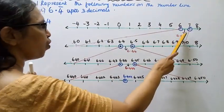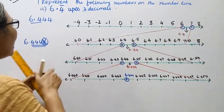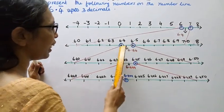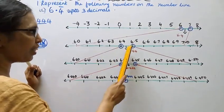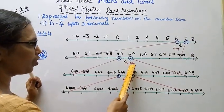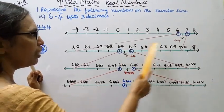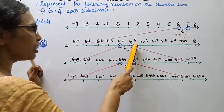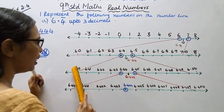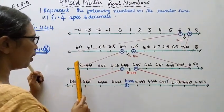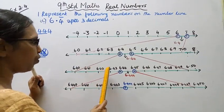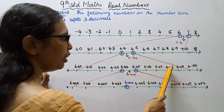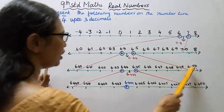Now, 6.444 lies between 6.4 and 6.5. We further divide the segment between 6.4 and 6.5 into 10 equal parts on the number line: 6.40, 6.41, 6.42, 6.43, 6.44, 6.45, 6.46, 6.47, 6.48, 6.49, 6.50.